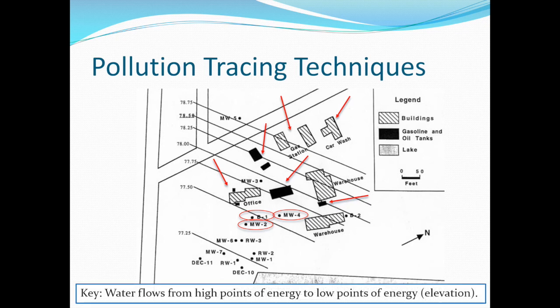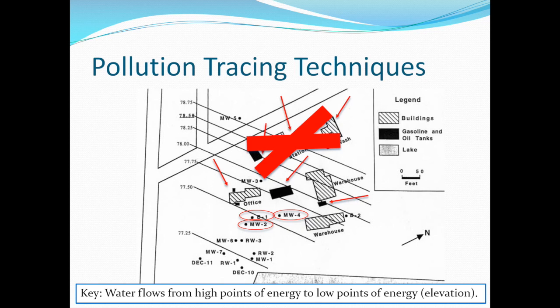The key to solving this problem is to remember that water flows from high to low. Let's look at the elevations of the contaminated wells compared to the sources. The gas station and car wash are above the contaminated wells, but they are also above well MW3, which is not contaminated. If these were the sources of pollution, well MW3 should also be contaminated — therefore, we can eliminate these sources from the list of suspects. That leaves us with four gasoline and oil tanks: two next to the office building, one between the warehouses, and one between the office and warehouse. The two beside the office building cannot have contaminated well MW4 because they are at the same elevation. That only leaves two possible sources: the tank between the office and warehouse and the tank between the warehouses.